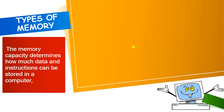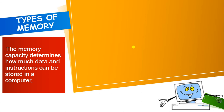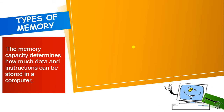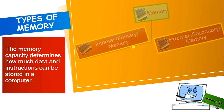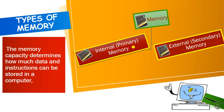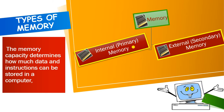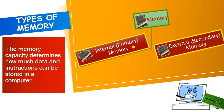Next, types of memory. Memory determines how much instruction and data you can store in your computer. There are two types of memory: first is internal memory and second is external memory. Internal memory is also called primary memory, and external memory is also called secondary memory. We are going to discuss both these memories in detail one by one.